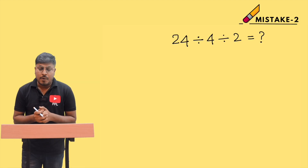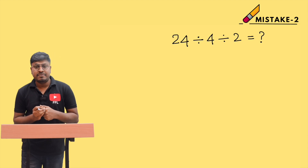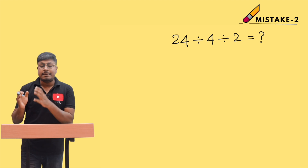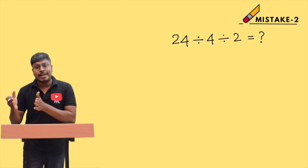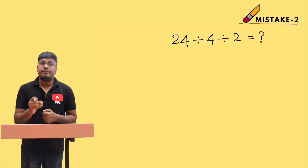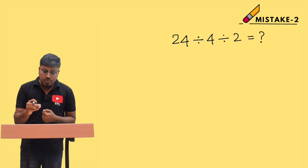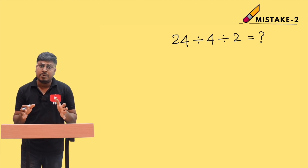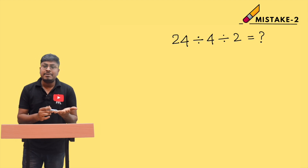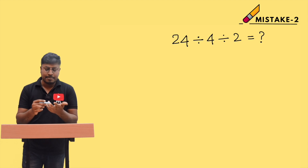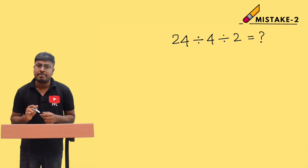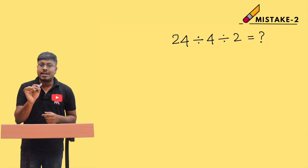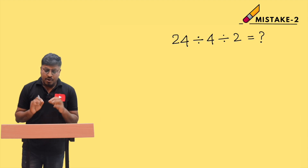This is the second video on the mistake series, on the topic of simplification, where the question contains two divisions simultaneously — for example: 24 ÷ 4 ÷ 2 = ? This is one of the most common question types in competitive exams like campus interviews, railway exams, and bank exams.